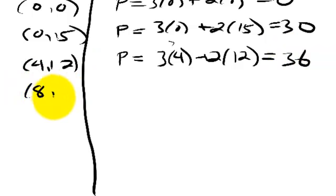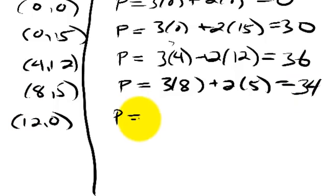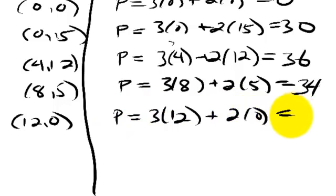And then we got eight, five. So, that's three times eight, plus two times five. That's twenty-four, plus ten. That's thirty-four. And then twelve, zero. So, that's three times twelve, plus two times zero, is thirty-six.